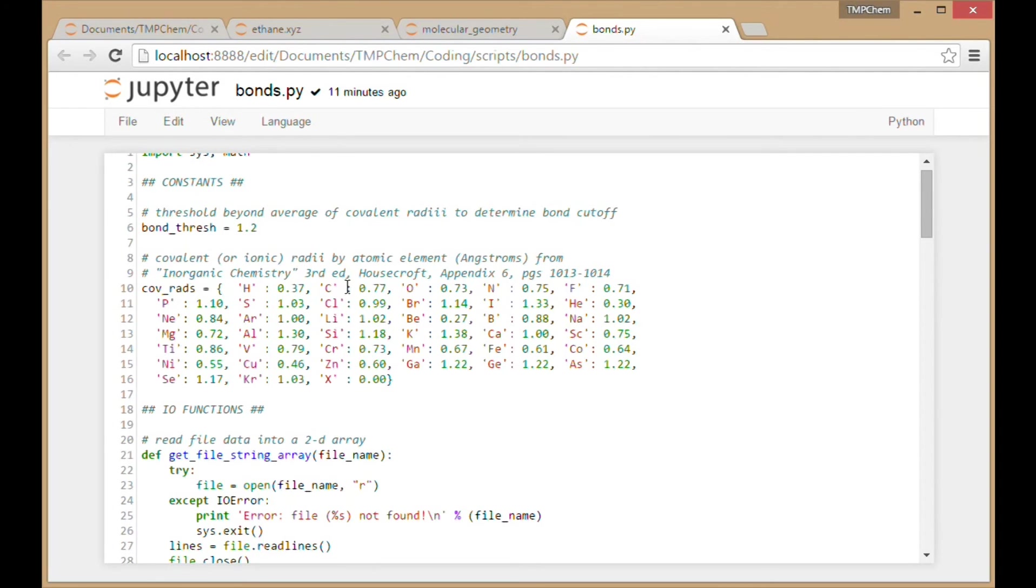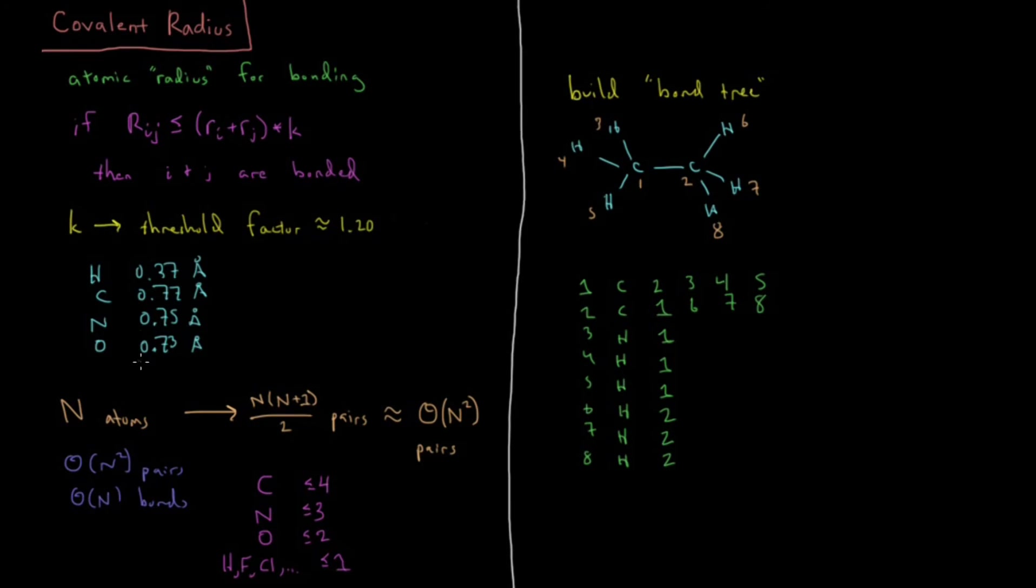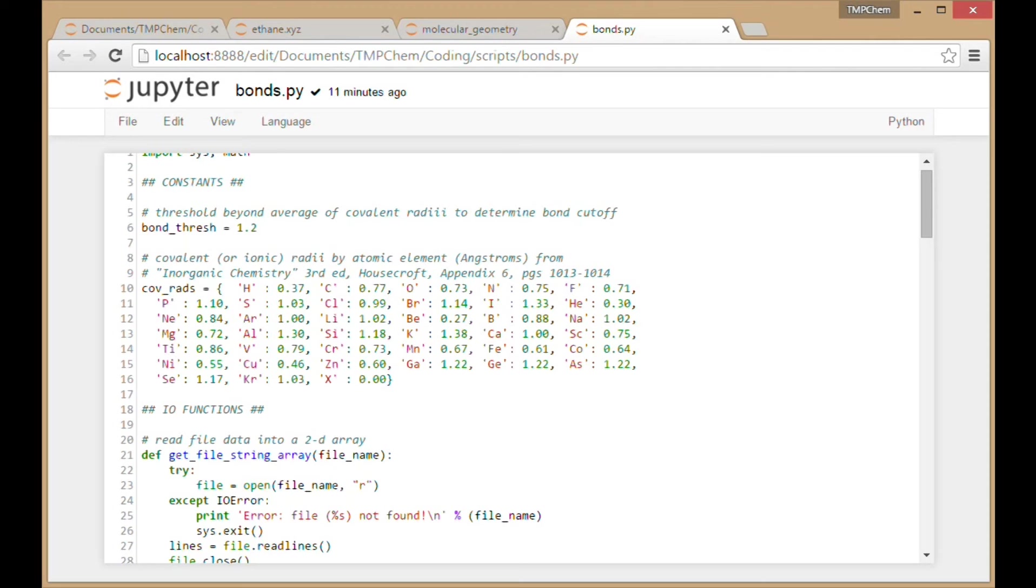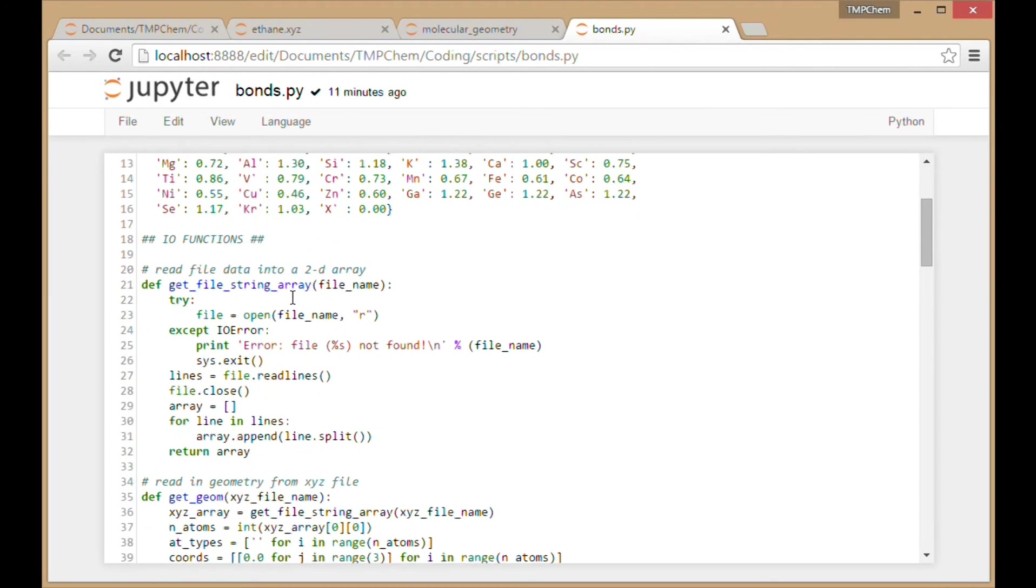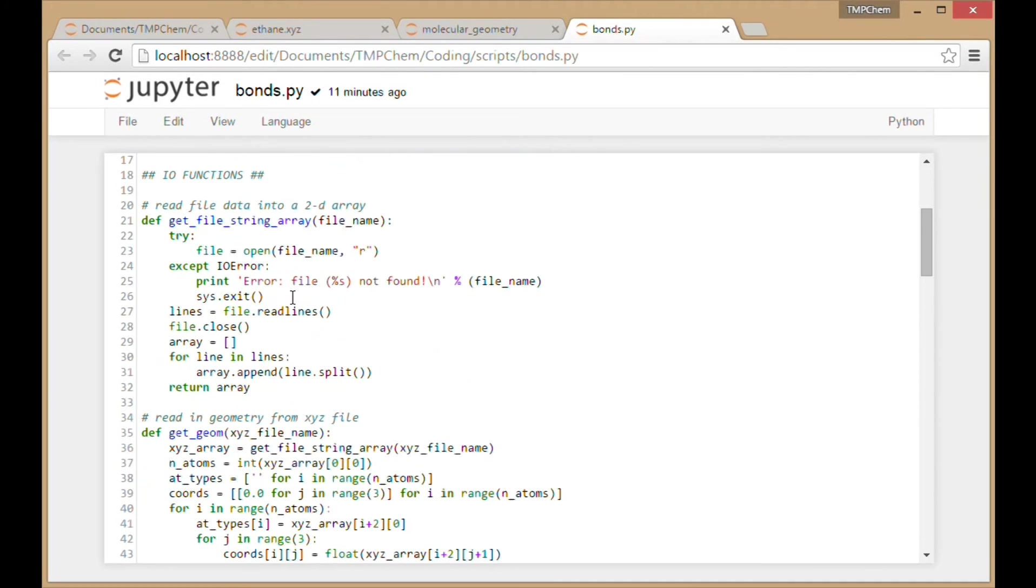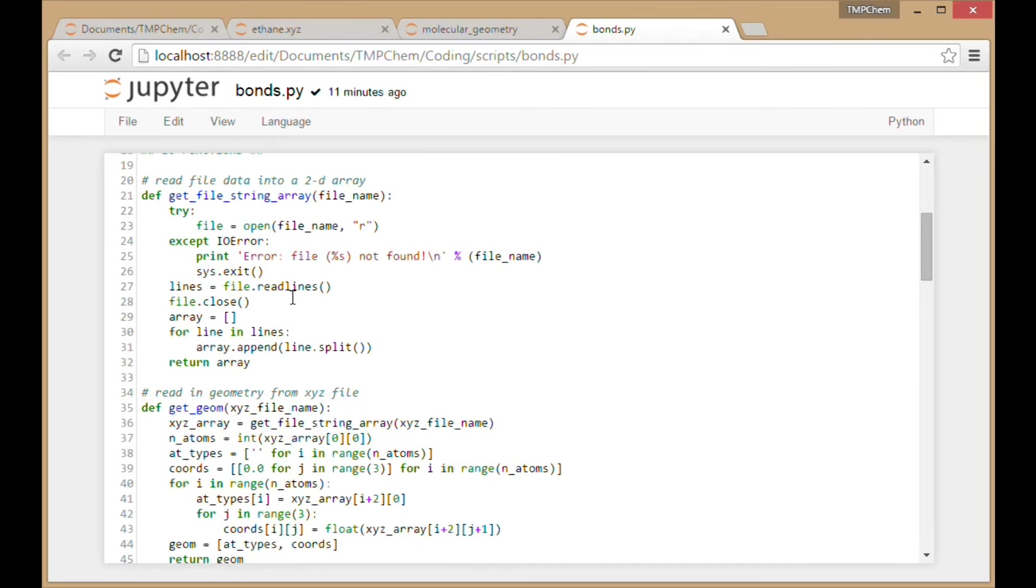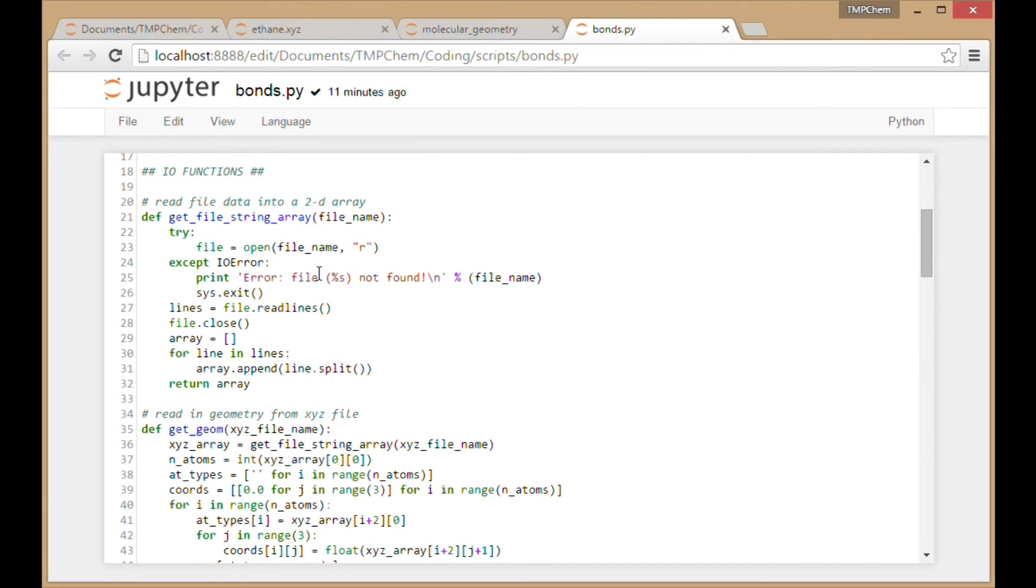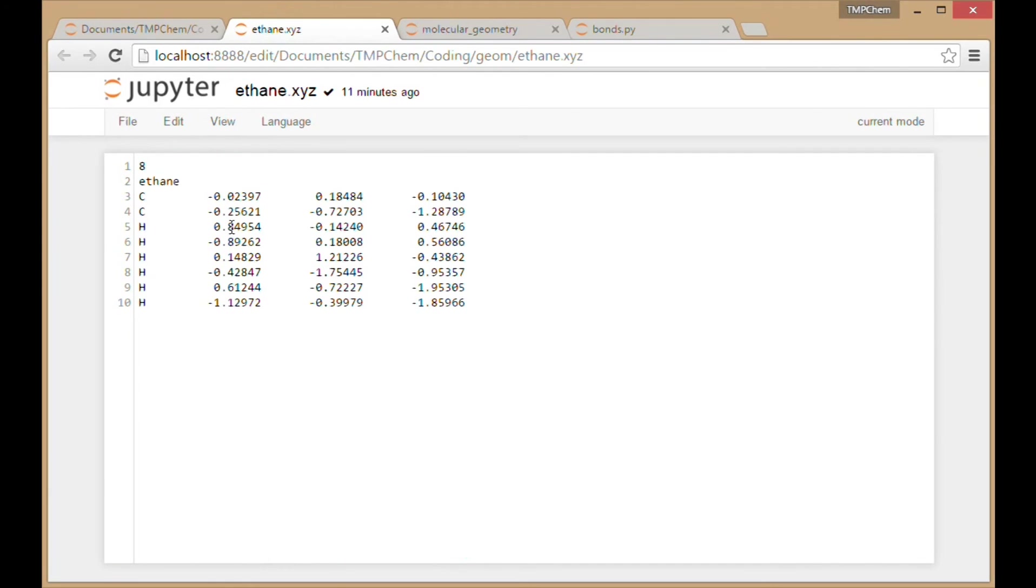I've got my covalent radii. You can see those first four values are the first four values that I listed, 0.37, 77, 75, 73, etc. I got these from an inorganic chemistry textbook. There's going to be various functions in this Python script that are going to allow me to read in this particular XYZ file and chop it into a two-dimensional array.